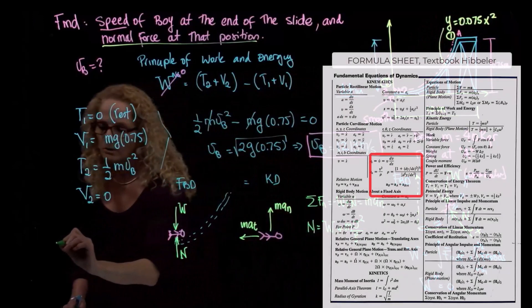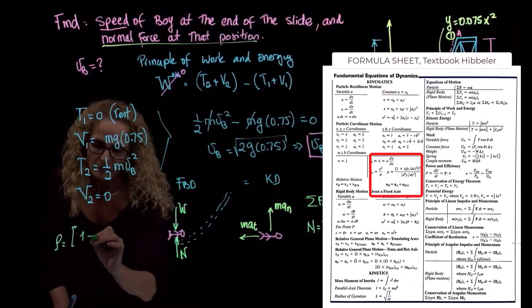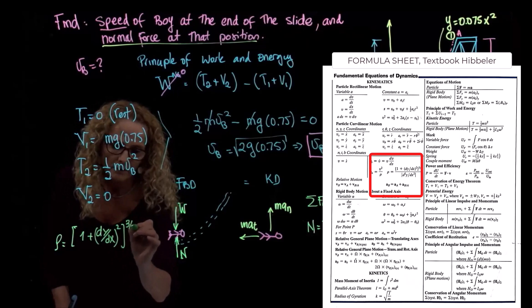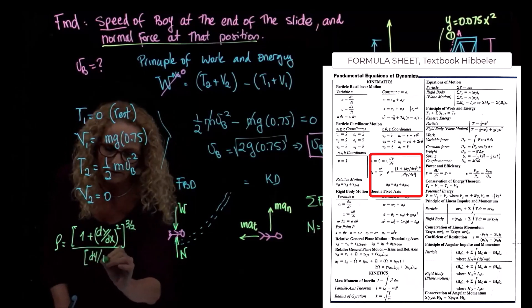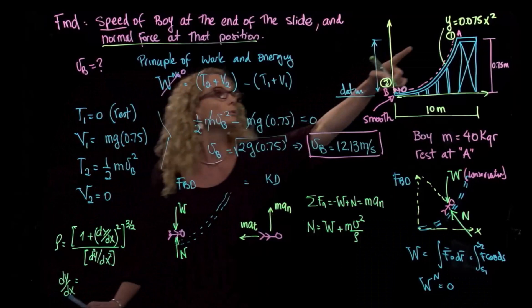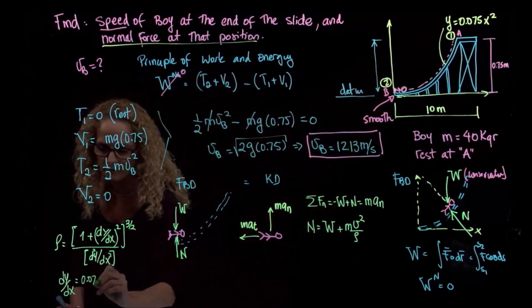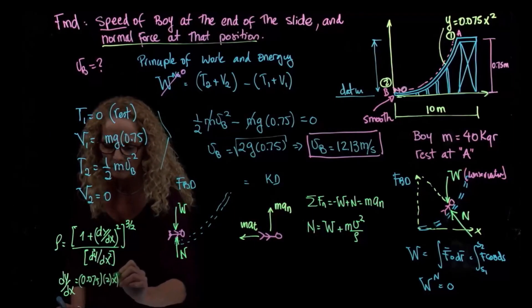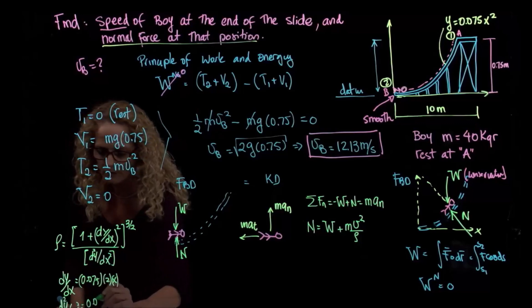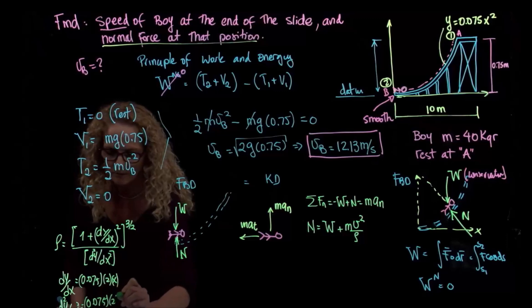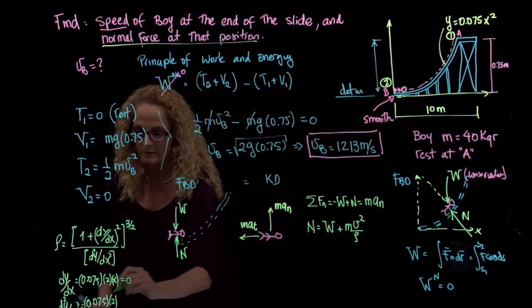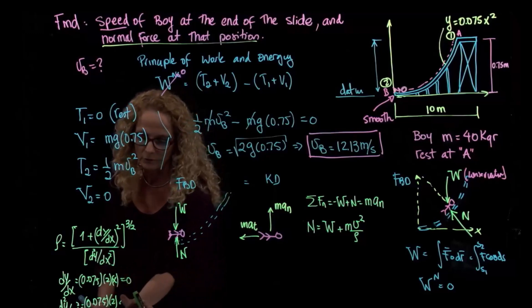As you recall, let me do it over here. This is 1 plus dy/dx squared to the 3/2 over d2y/dx2, the second derivative. So dy/dx equals 2 times 0.075 times x. And the second derivative will be equal to 0.075 times 2. And if I evaluate that, my coordinate system is at 0. So I have to evaluate that at 0. And this is just a multiplication of those two numbers, right?